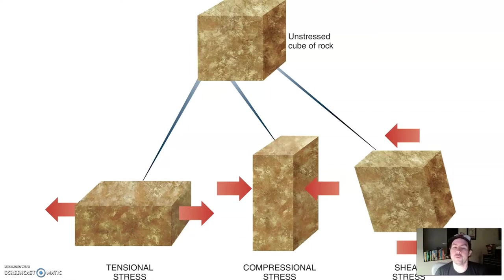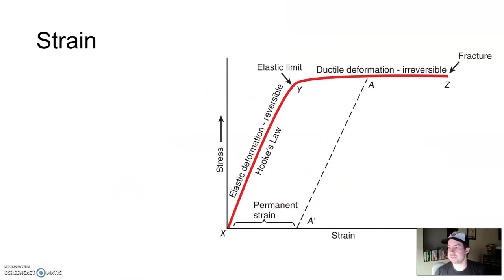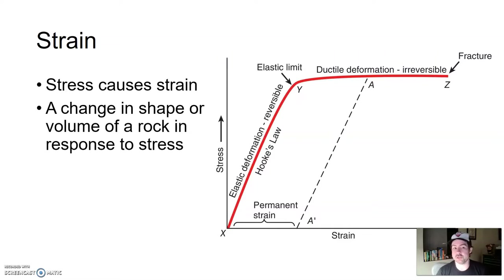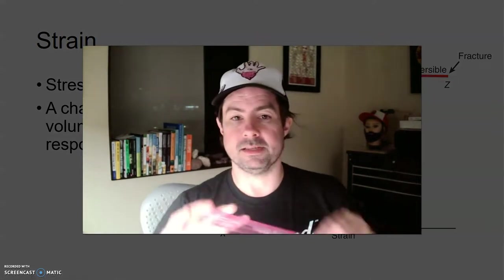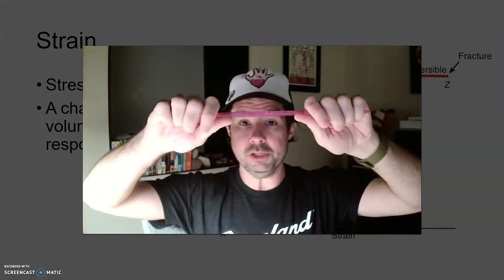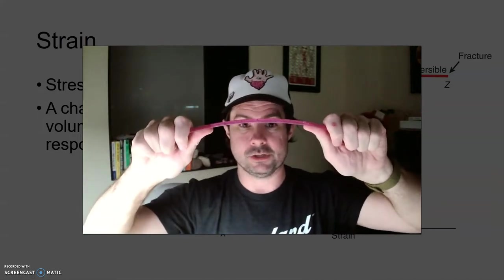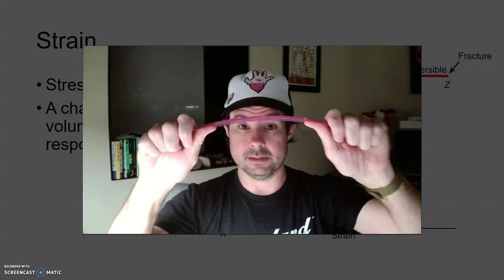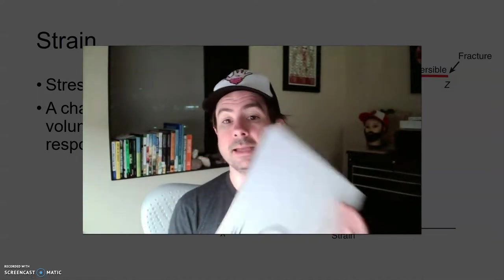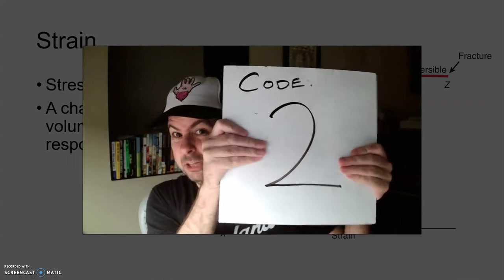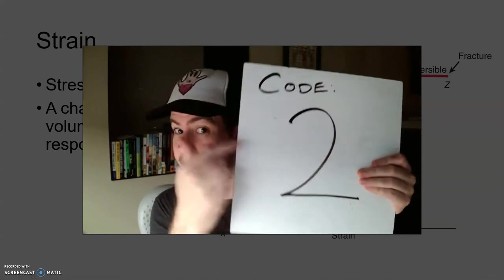Stress is the actual force. If the rocks break and move or fold, then that's defined as strain. So stress causes strain. Strain is a change in shape or volume of a rock in response to stress. For example, I'm applying a stress to this ruler — that's the force — and the strain is the change in shape that you see. I can do the same thing with this board: apply a stress that causes a strain.